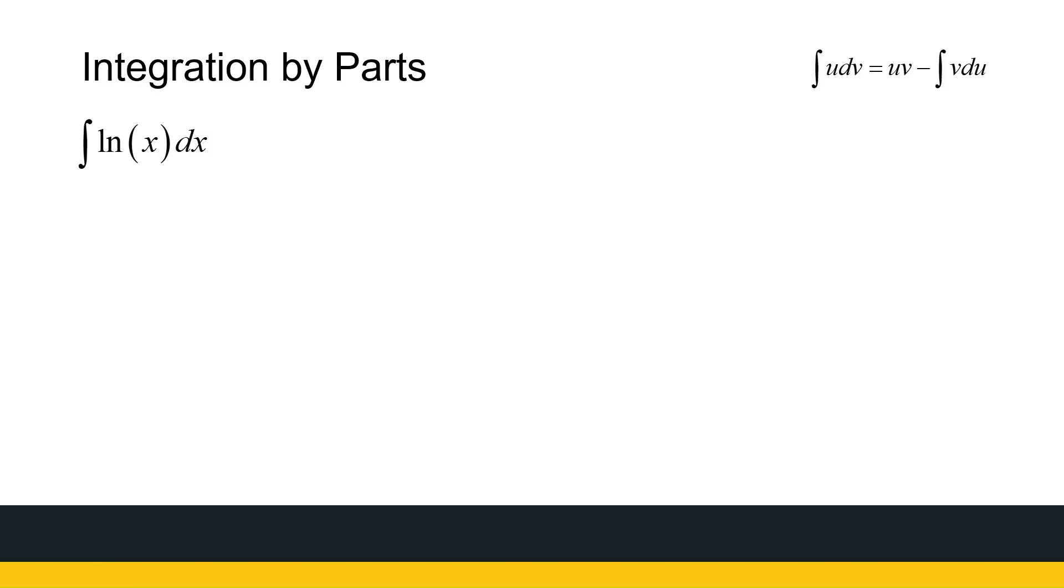So the first one we're looking at is finding the antiderivative of ln(x). Now we know how to differentiate ln(x). The derivative of ln(x) is 1 over x, but the antiderivative of ln(x) is not one of our standard integrals. So we're going to use integration by parts. Even though it does not look like the product of two functions, that's what we're going to do.